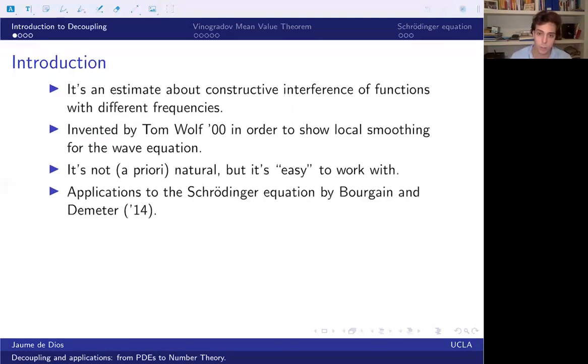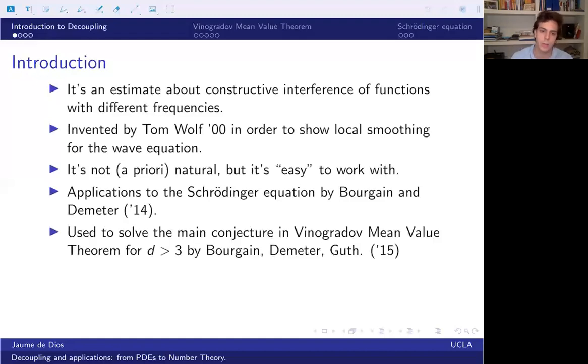And we're going to see two applications of this estimate. One is to the Schrodinger equation by Bourgain and Demeter. We're going to see that one of the most important estimates for this Schrodinger equation can be transformed into a decoupling estimate and it's essentially equivalent to the decoupling estimate. And then to see something radically different, we will see how to solve what's called the main conjecture in the Vinogradov mean value theorem, which was a conjecture posed by Vinogradov more than 80 years ago.